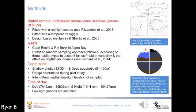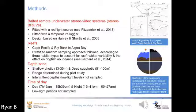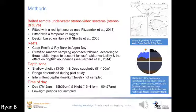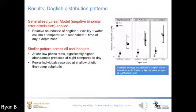Each reef was sampled at a shallow photic zone and deep subphotic zone, with ranges determined during a pilot study. Each depth zone at each reef was sampled at both day and night, at least one hour after sunrise and sunset. A negative binomial generalized linear model was applied to investigate relative abundance of dogfish in response to depth zone and time of day. A similar pattern was seen across all reef habitats: at shallow photic reefs, significantly higher abundances were predicted at night compared to day, and fewer individuals were recorded at shallow photic compared to deep subphotic reefs.